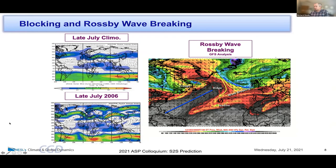A lot of these events, associated with a pattern of relative vorticity, feature folding of the interface between the high and low vorticity regions — and these tend to be wave breaking events. There's either cyclonic or anti-cyclonic wave breaking. That's the key question: whether you locally have a jet, or whether the wave breaking at the exit of the jet gives rise to these blocking-type events. But they're tough to predict.